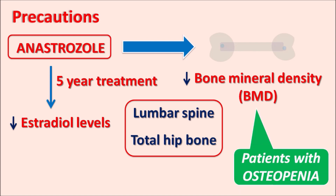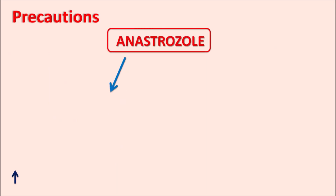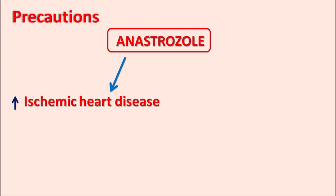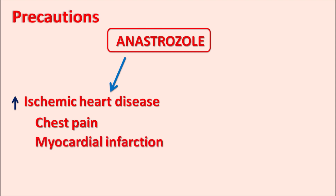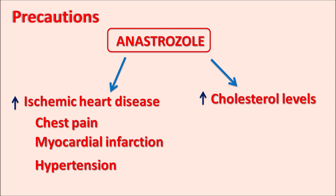If the patient already has osteopenia with reduced bone mineral density, the risk of fractures is further increased by anastrozole. Similarly, this drug can increase the risk of ischemic heart disease, as it can precipitate chest pain leading to angina, increase the risk of myocardial infarction, and elevate blood pressure leading to hypertension. If the patient already has any cardiovascular disorders, anastrozole can further increase ischemic heart disease. This drug can also slightly increase cholesterol levels, further increasing the risk of ischemic heart disease.